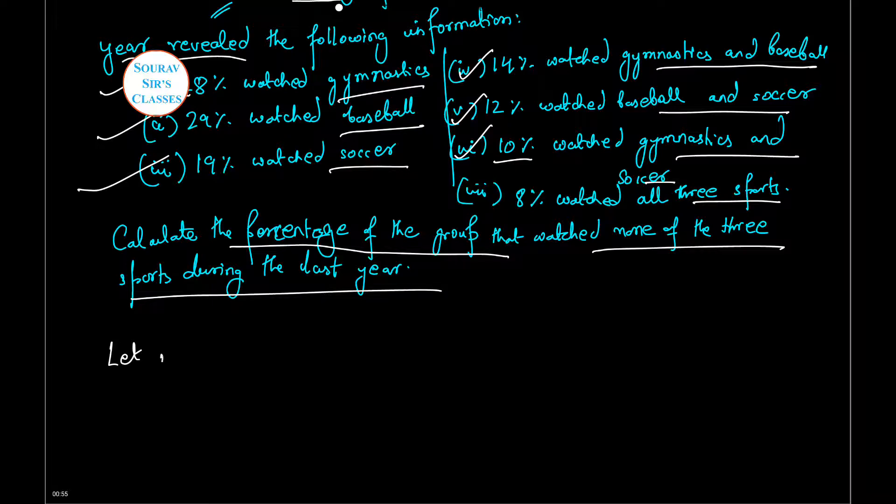Let us assume a variable g equals viewers who watch gymnastics, b equals viewers who watched baseball, and lastly s equals viewers, as you can understand, it's soccer.